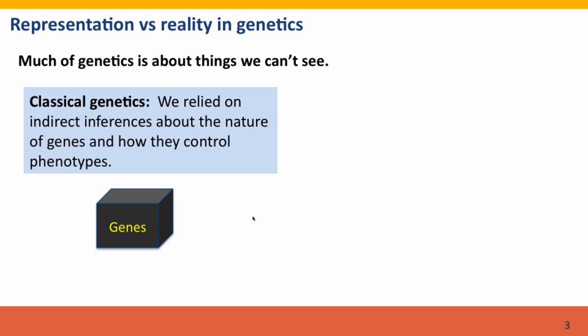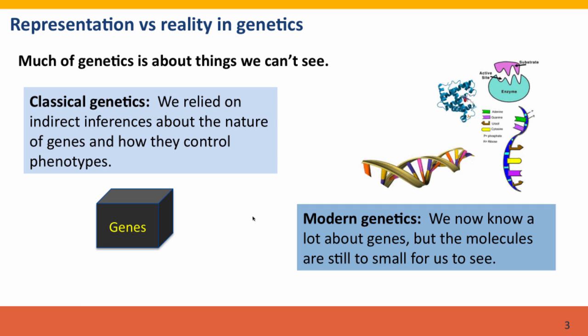So genetics is necessarily and has always been about things we can't see. In classical genetics, when genes were first discovered, they were purely hypothetical. Nobody had any idea of their properties at all. We know a lot more now. We know all about the molecules, but they're still too small for us to see.